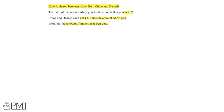We're told that the ratio of the amount of money that Abby gets to the amount that Ben gets is 2 to 7, so we can write that down. We're also told that Chloe and Dinesh each get 1.5 times the amount that Abby gets, which means their ratio will be 1.5 times greater than Abby's. So 2 multiplied by 1.5 is equal to 3, meaning the ratio of Chloe to Dinesh is 3 to 3 because they both get the same amount.